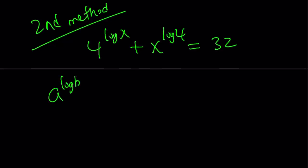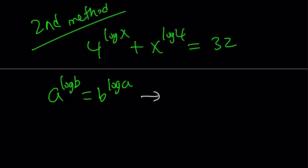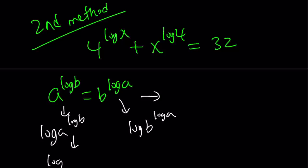a^(log b) equals b^(log a). Now why is this true? We proved this in another video, but this is true because these expressions are equal because their logs are equal. If you log this, you get log a to the power log b. If you log this, you get log b to the power log a. This becomes log b times log a, and this becomes log a times log b. And they're equal. Therefore, the original expressions are equal.